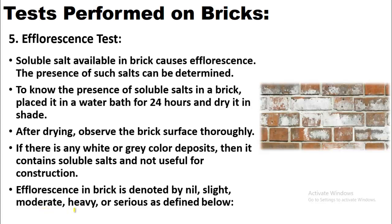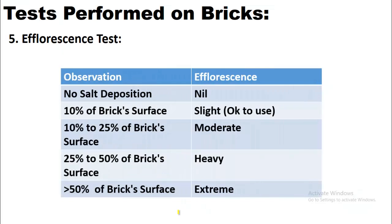Efflorescence in bricks is denoted as nil, slight, moderate, heavy, or serious. If there is no salt deposition, there is no efflorescence. If white shade covers up to 10% of the brick surface after drying, efflorescence is slight and the brick is acceptable. If coverage is between 10 to 25%, efflorescence is moderate. If 25 to 50% of the surface is affected, it is heavy and not recommended for construction. If it exceeds 50%, efflorescence is extreme and the brick should be rejected.